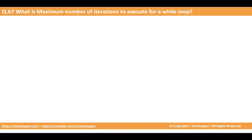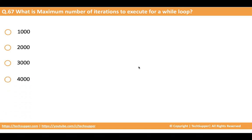The next question is: what is the maximum number of iterations to execute for a while loop? When you use a while loop, there is a maximum number of times it can run. The options are 1000, 2000, 3000, 4000, and 5000. The correct answer is 5000 — you can run a while loop a maximum of 5000 times. If it goes beyond this, the while loop will not execute and you may receive an error.